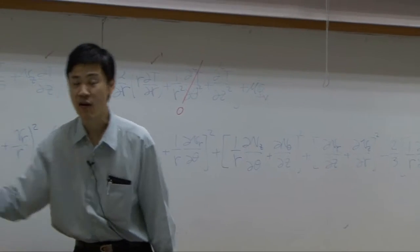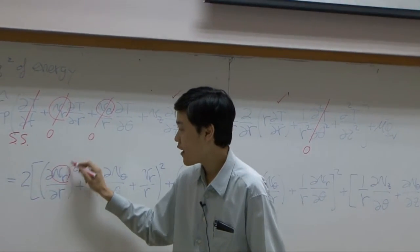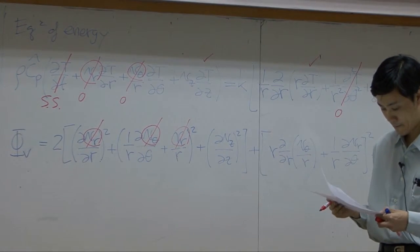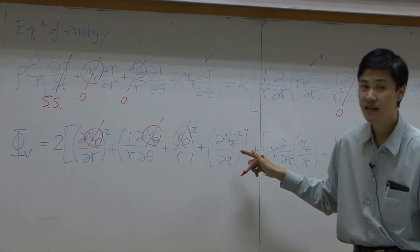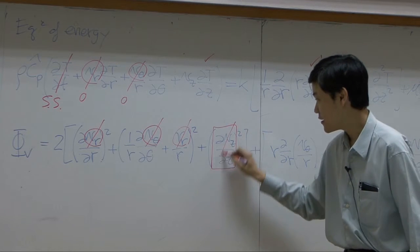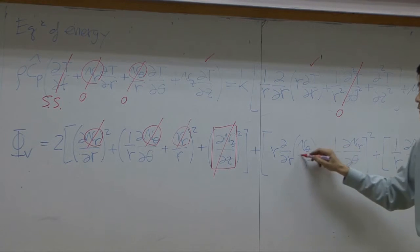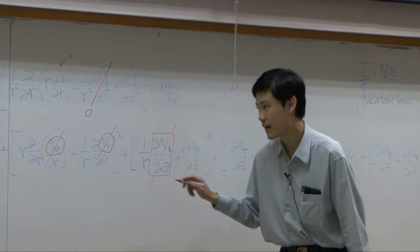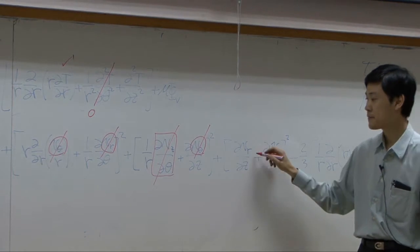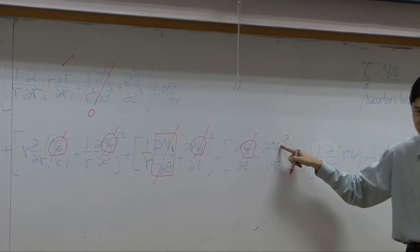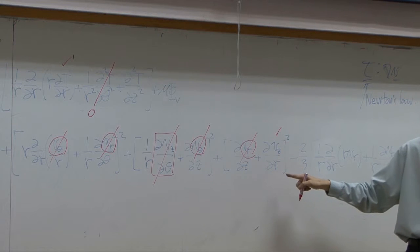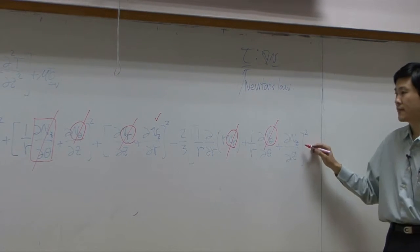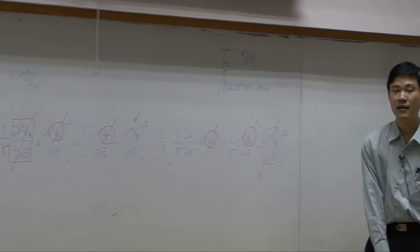Look at this heat dissipation or energy dissipation term. Vr is zero, zeta is zero. Vz does not change with respect to zeta, so the whole term is zero. Vz is zero, R is zero. Vz does not change with respect to zeta, Vz is zero. Vr is zero, Vz is zero. Vz does not change with respect to zeta, so that term can be dropped.